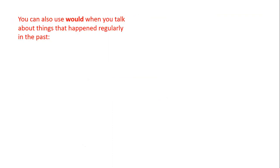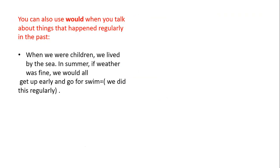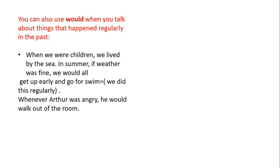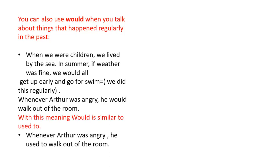We can also use 'would' when we talk about things that happened regularly in the past. For example: 'When we were children, we lived by the sea. In summer, if the weather was fine, we would all get up early and go for a swim' — meaning we did it regularly. 'Whenever Arthur was angry, he would walk out of the room.' With this meaning, 'would' is similar to 'used to': 'Whenever Arthur was angry, he used to walk out of the room.'